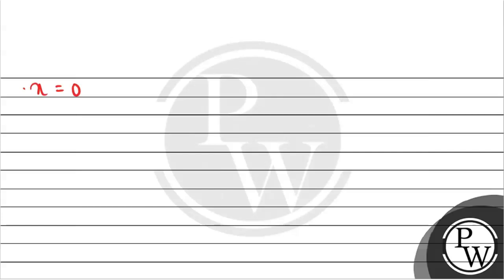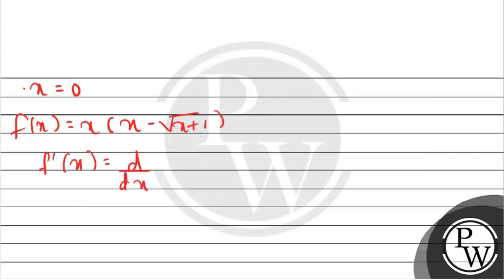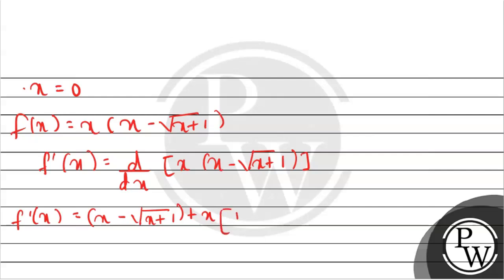Next we check differentiability at x=0. We find the derivative f'(x) using the product rule. Since f(x) = x multiplied by (√x minus √(x+1)), we differentiate f(x) with respect to x. Applying the product rule: f'(x) = x times (1 minus 1 divided by 2√(x+1)) plus (√x minus √(x+1)) times 1.